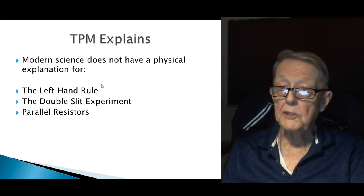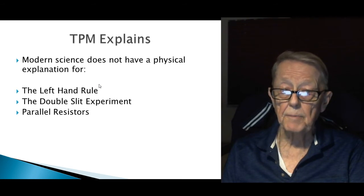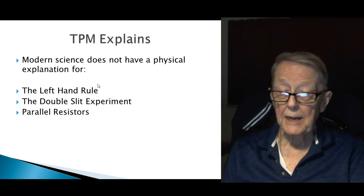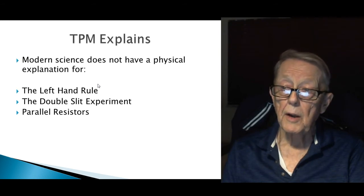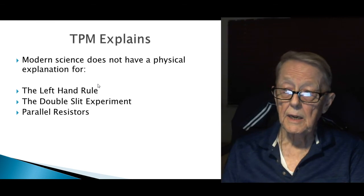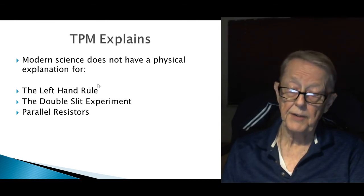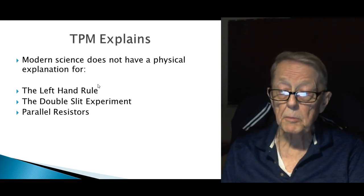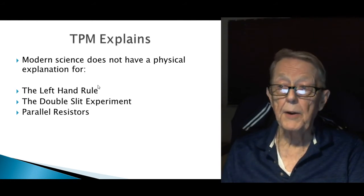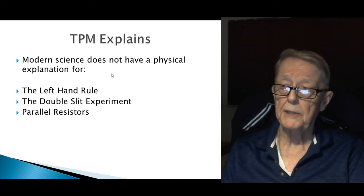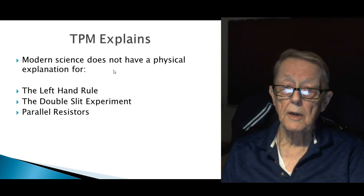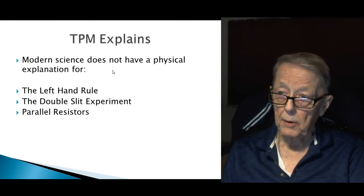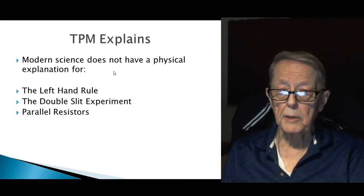The TPM explains things that modern science doesn't have an explanation for. Left-hand rule, of course. Most people talk about the right-hand rule because they're talking about current, not electron flow. Well I'm talking about G1 particles which replace the electron. That's G1 flow, and when you do that, you've got to use the left-hand rule. They have no physical explanation for why, they just say use it. We can explain the double slit experiment. There's a video on that, there's a video on all three of these. Parallel resistors. There's no explanation for parallel resistors. Why does one resistor somehow know about the other resistor when, in fact, they can't know anything? Particle model explains these, and I probably have a few more to add.